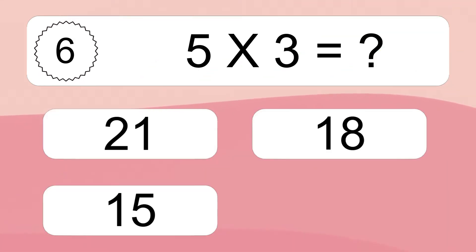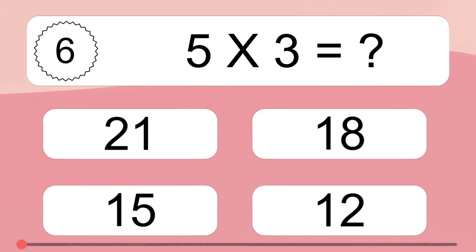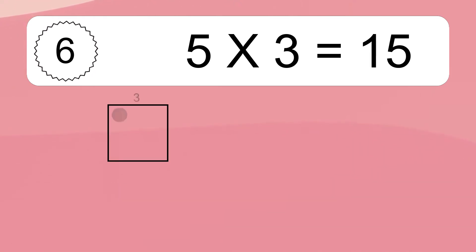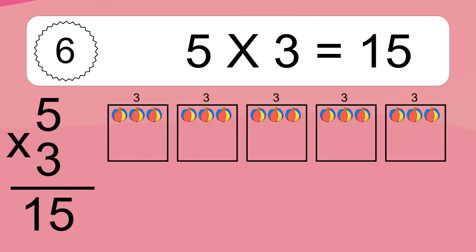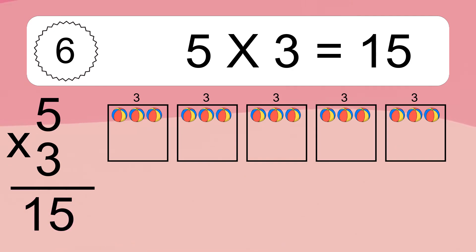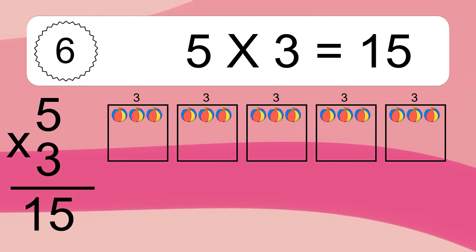5 times 3 equals what? 5 times 3 equals 15. We have 5 boxes, and each box has 3 colorful balls inside. If you count all the balls in all the boxes together, you will have 5 times 3 balls. This equals 15 balls.